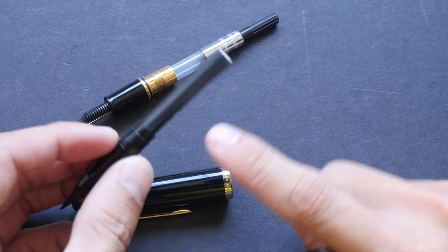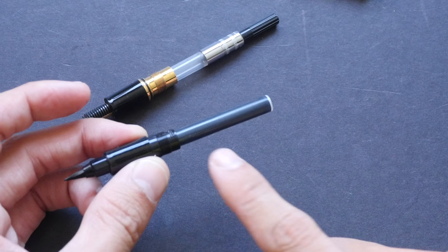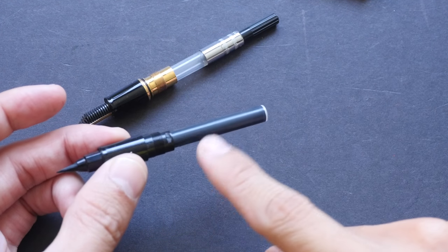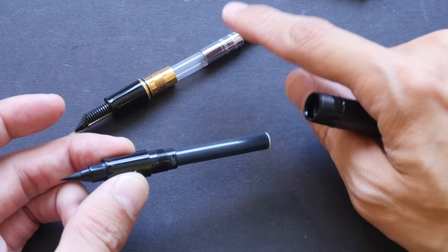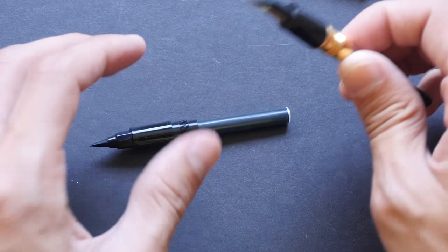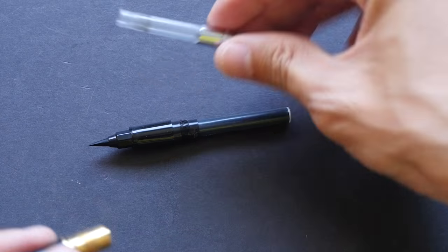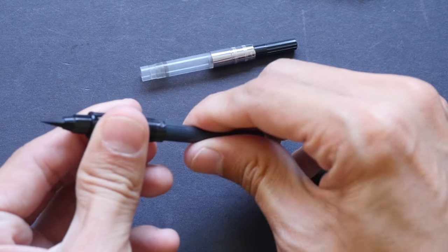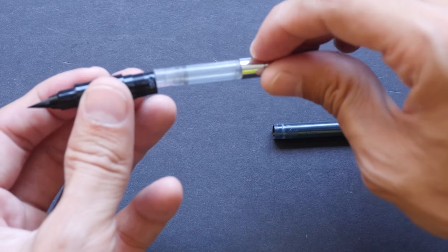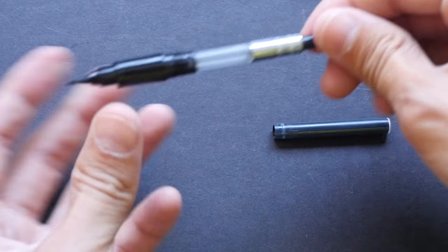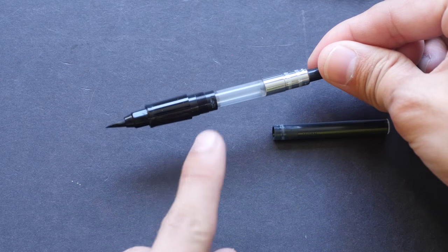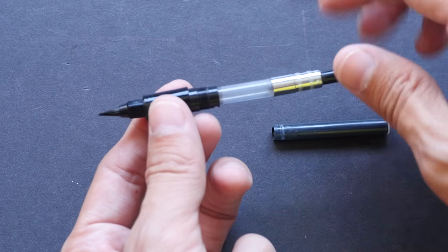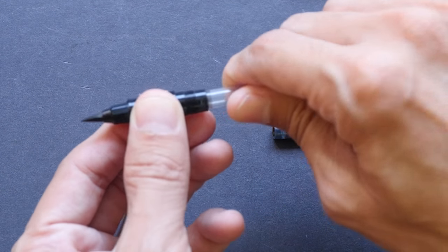By the way, this is the ink cartridge that comes with the brush pen. They come with, I think, one or two extra ink cartridges. However, you can actually use the Sailor ink cartridge. Let me show that to you. This is the Sailor fountain pen ink cartridge, and you can fit it into the brush grip here. So this is going to save you a lot of money if you want to use your own ink.